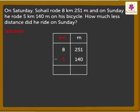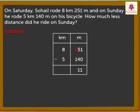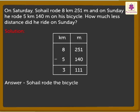To find out the difference, we need to subtract 5 kilometres 140 metres from 8 kilometres 251 metres. We start with metres and then go on to the kilometres. 1 minus 0 is equal to 1, 5 minus 4 is equal to 1, 2 minus 1 is equal to 1. Now the kilometres: 8 minus 5 is equal to 3. So the answer is 3 kilometres 111 metres. Thus, Sohail rode the bicycle 3 kilometres 111 metres less on Sunday.